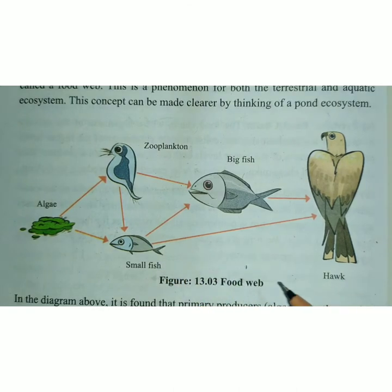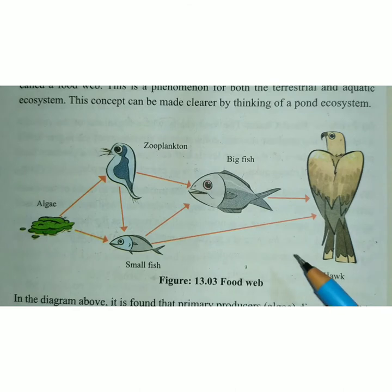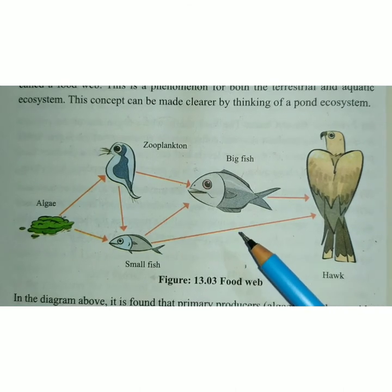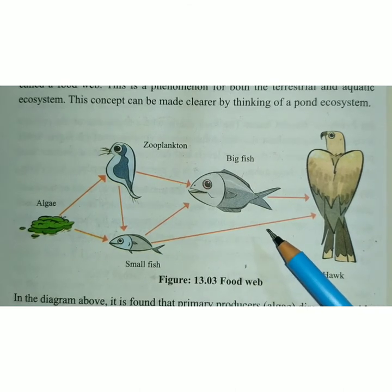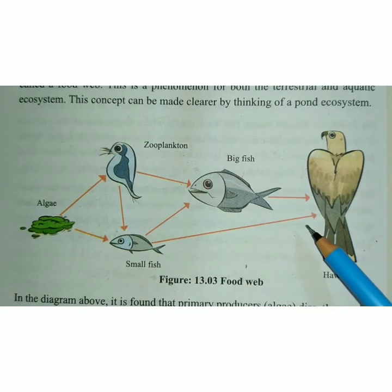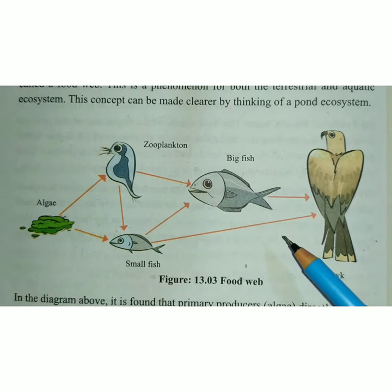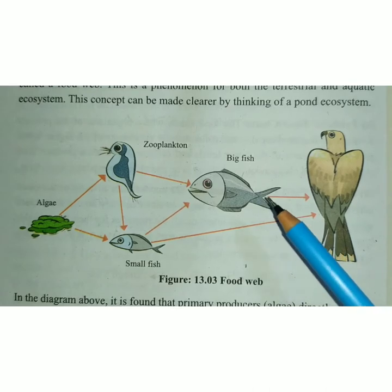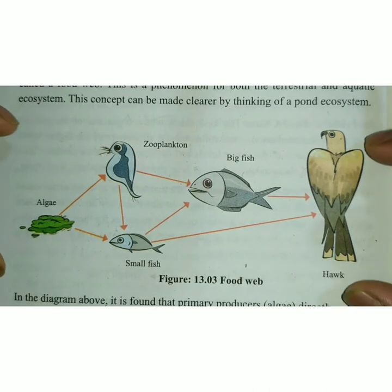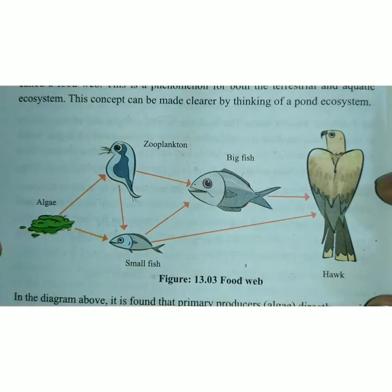That is why many types of food chains are formed. This collective set of food chains is called a food web.